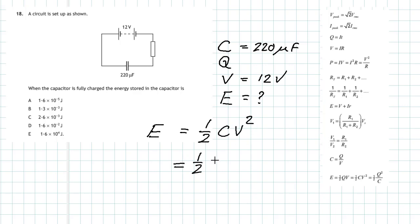We just put the numbers in: one half times the capacitance 220 times 10 to the minus 6, multiplied by the voltage squared. Don't forget to multiply 12 by 12. Do that in your calculator and you get an answer of 1.6 times 10 to the minus 2 joules. That's the energy stored in the capacitor, and the answer is 18D.